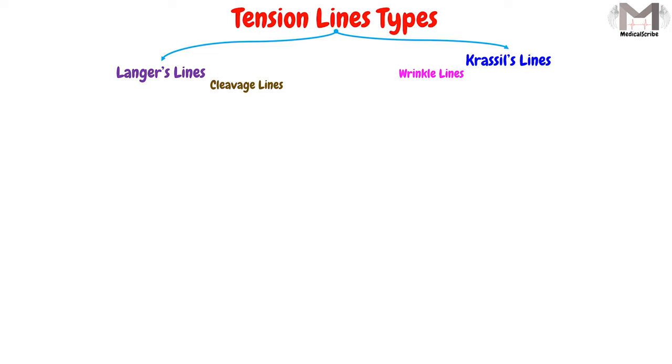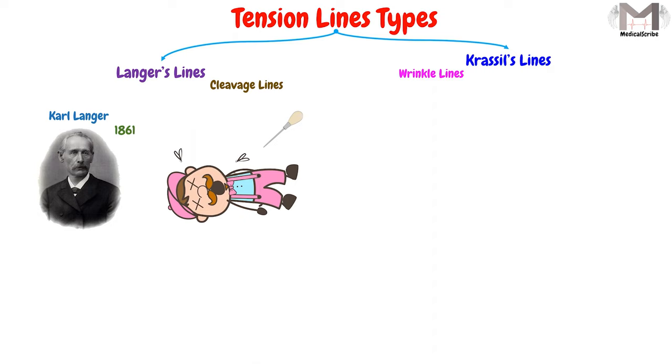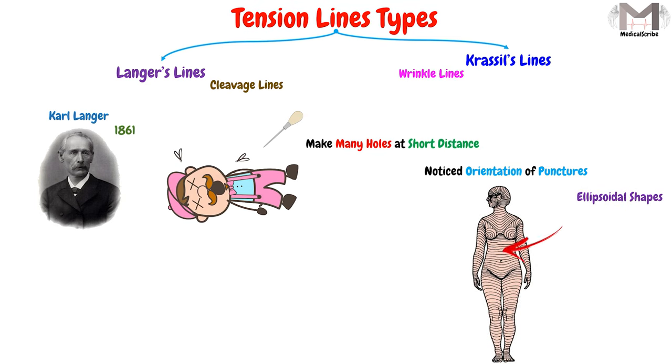These lines were discovered by Karl Langer in 1861, when Karl brought a cadaver and an awl, and began to make many holes at a short distance from each other in the cadaver skin. He noticed after a while that the orientation of the punctures had an ellipsoidal shape. And from this test, he noticed the direction of the lines and its distribution pattern on the skin. As a result, he made what we call now the Langer's lines.